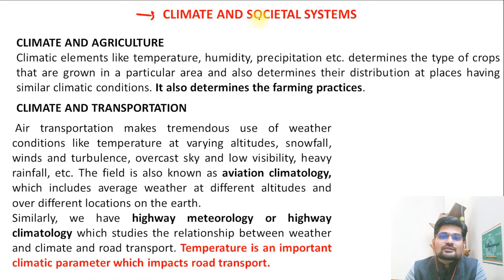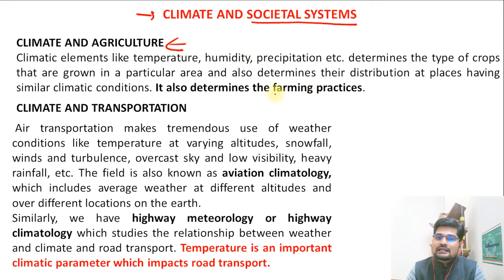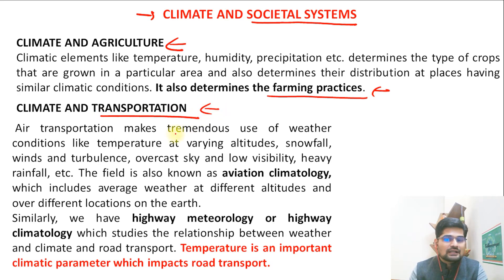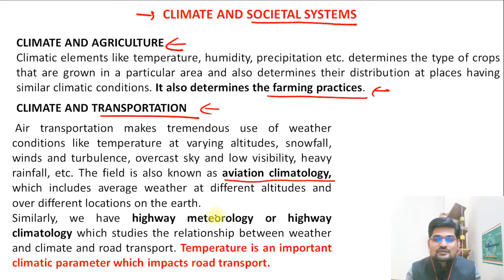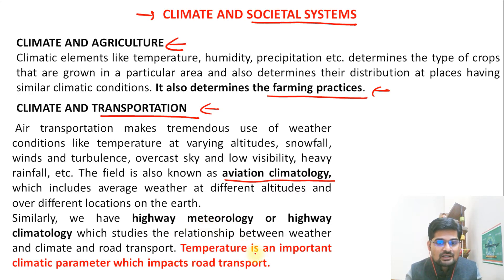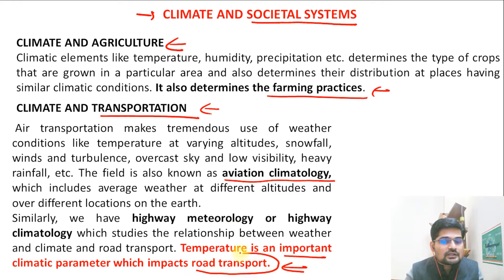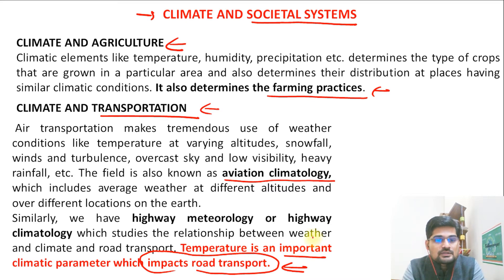Now let's talk about climate and societal systems. Climate and agriculture — we already understand how it is linked, as it determines our farming practices. Transportation is also dependent upon climate: in aviation, overcast, turbulent, or low-visibility conditions are caused by climatic factors. There are problems in highways and upper air circulation affecting the flying system. Temperature is also an important climatic parameter impacting road transport.